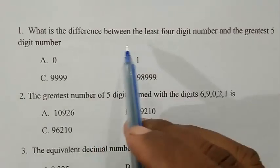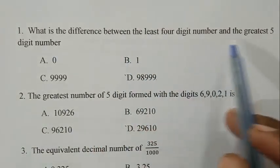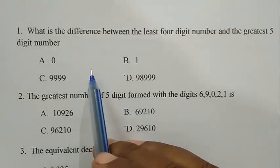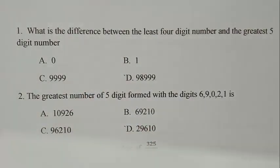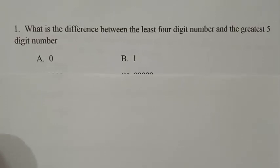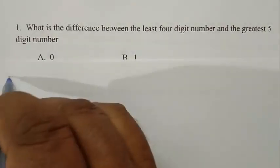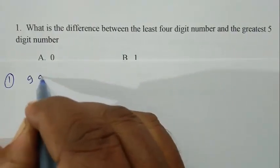Question number 1: What is the difference between the least 4-digit number and greatest 5-digit number? We write first the greatest 5-digit number, then the least 4-digit number.